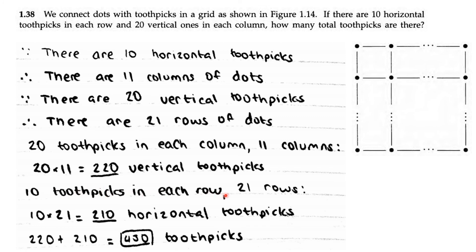And the same thing for each row: 10 toothpicks in each row, and there are 21 rows. So 10 times 21, which is 210. So there are 210 horizontal toothpicks. So in total, there is 220 plus 210, which equals 430 toothpicks.